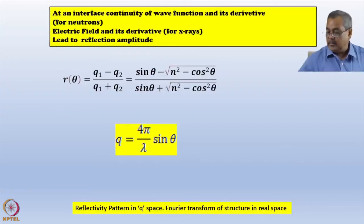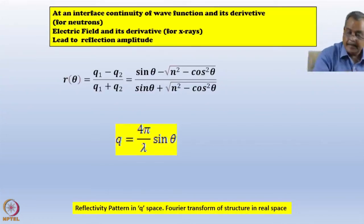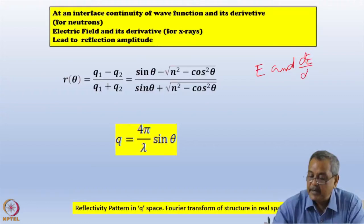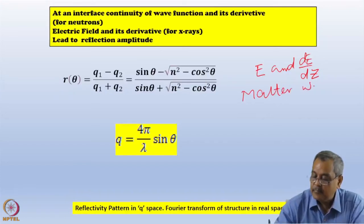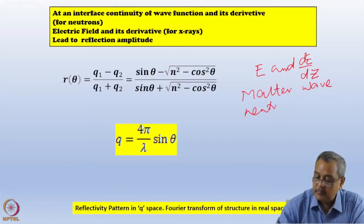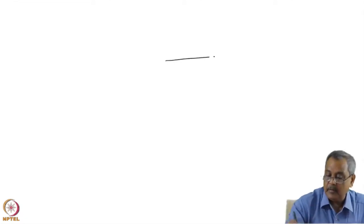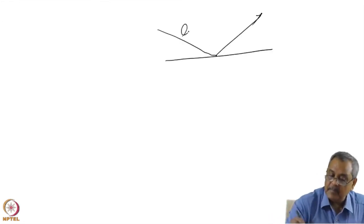Now, how do I evaluate the reflectivity at an interface? For x-rays, the boundary condition from classical electromagnetism is that the electric field E and its derivative dE/dz must be continuous. For matter waves such as neutrons, the wave function ψ and its derivative dψ/dz must be continuous. I am now considering an interface where specular reflection is taking place.